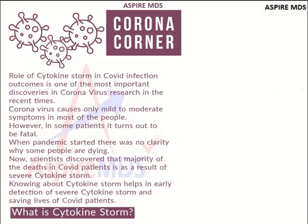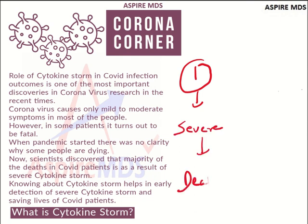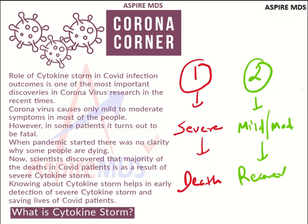When this pandemic and outbreak took place, two kinds of patients were noticed. The first kind showed a severe reaction and ultimately the patient would die — a fatal result. The second kind showed only mild to moderate symptoms and ultimately they recovered. After research, it was found that this fatality in certain patients was related to cytokine storm.